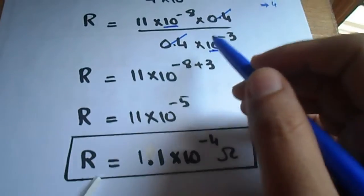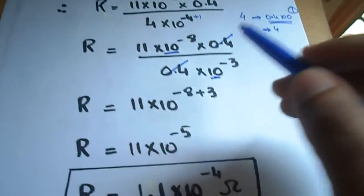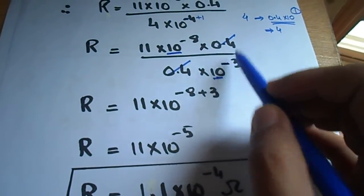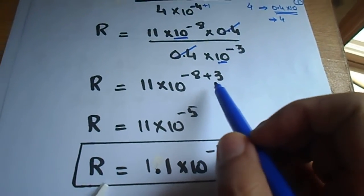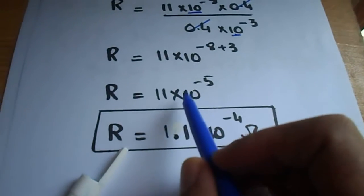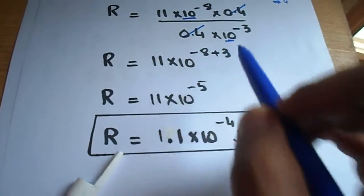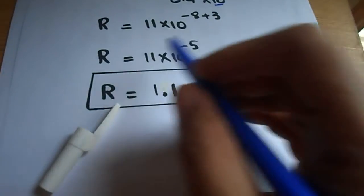Minus 8 and this denominator minus 3 will become plus 3, so 11 into 10 to the power minus 5. So minus 8 plus 3 gives minus 5.